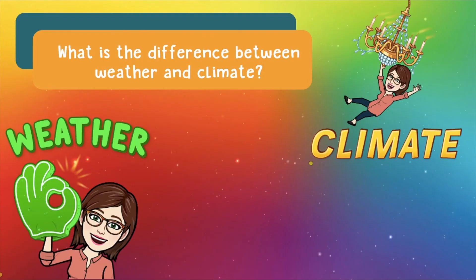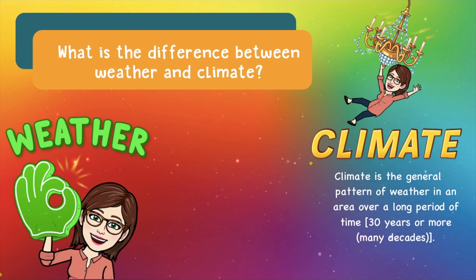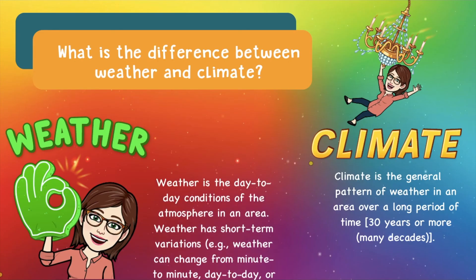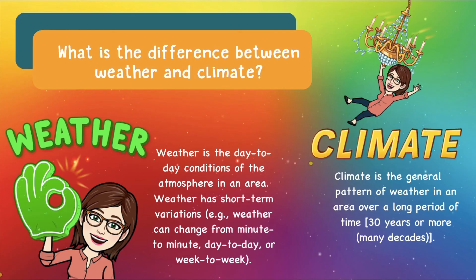So what is the difference between weather and climate? Climate is the general pattern of weather in an area over a long period of time — 30 years or more, many decades. A decade is 10 years. Weather is the day-to-day conditions of the atmosphere in an area. Weather has short-term variations — for example, weather can change from minute to minute, day-to-day, or week-to-week.